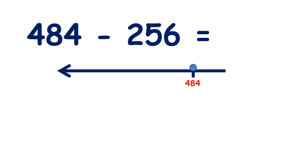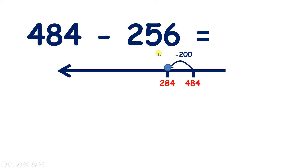Now we have 484 minus 256. If we subtract 2 hundreds, we now have 284, because 4 minus 2 is 2. Now we can subtract 5 tens from our 8 tens, which leaves us with 3 tens, so we have 234.